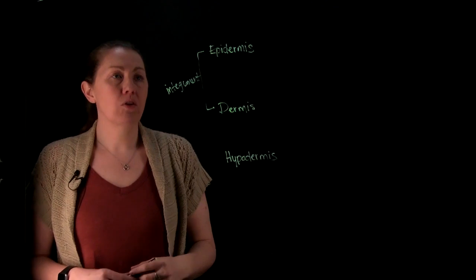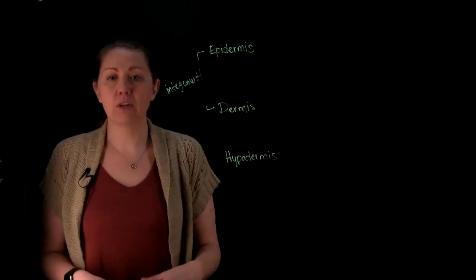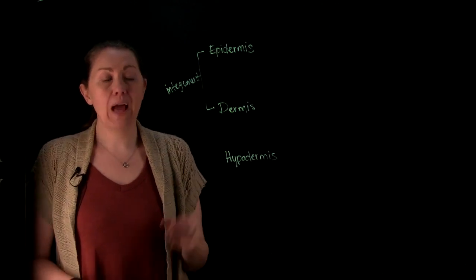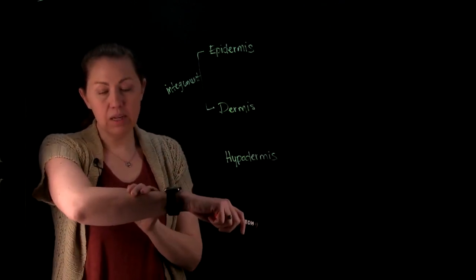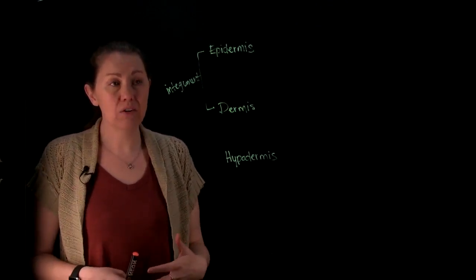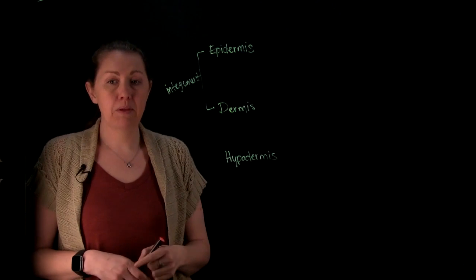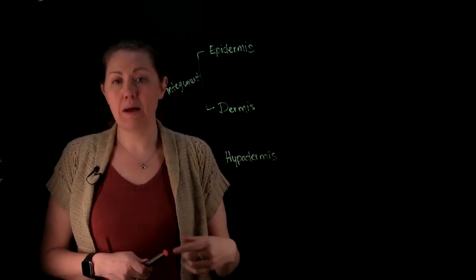So let's kind of work our way through all of these. With your epidermis, you're looking at a lining. Anywhere in your body that you have a lining, you're dealing with epithelium. So the epithelium that you have here is going to be constantly interacting with your environment. It's going to get rubbed, it's going to get damaged. So we want to have a lot of layers so you can always replace them. So we're dealing with a keratinized stratified squamous epithelium.